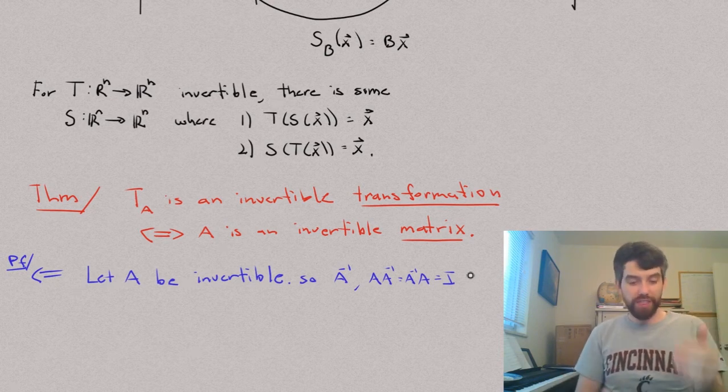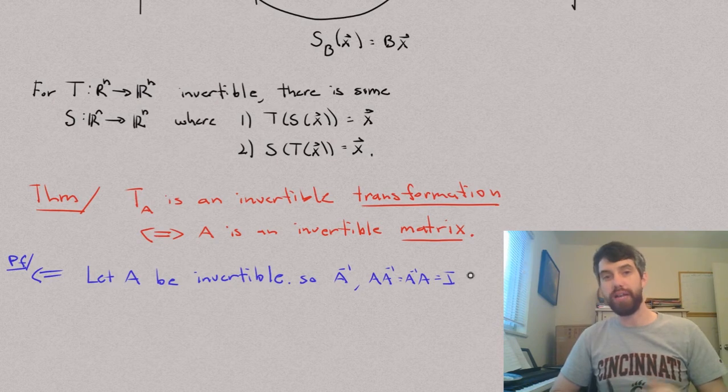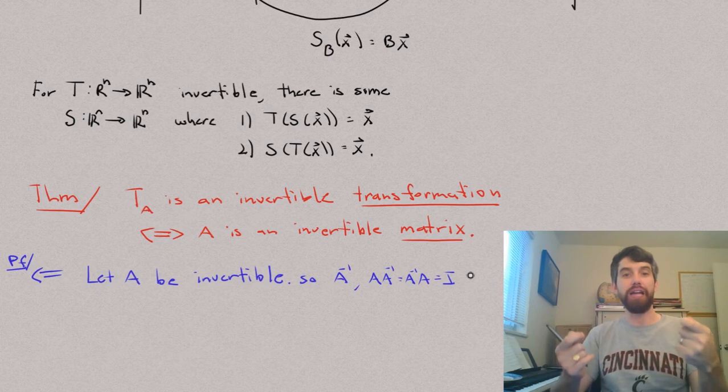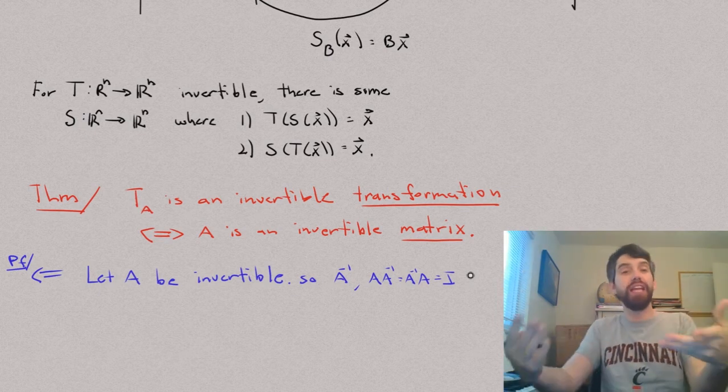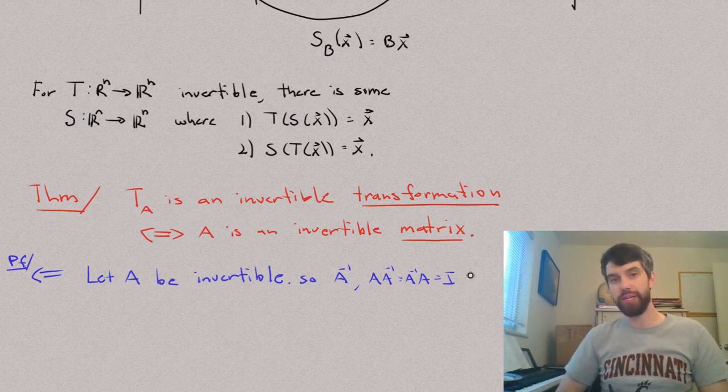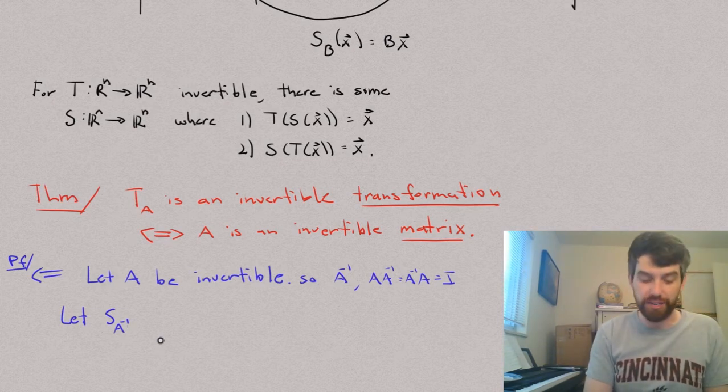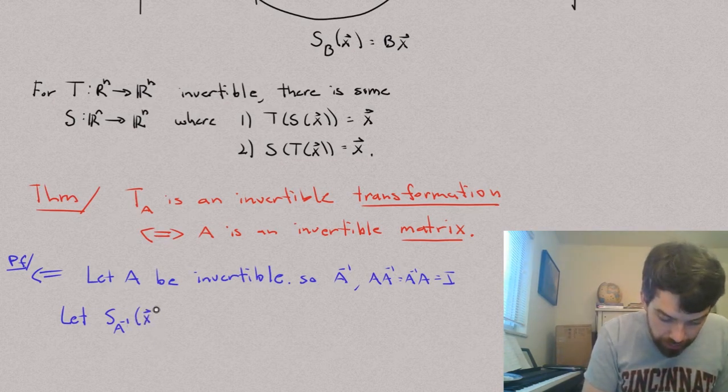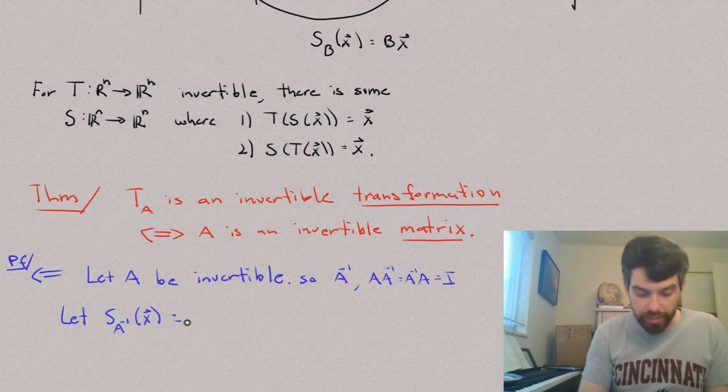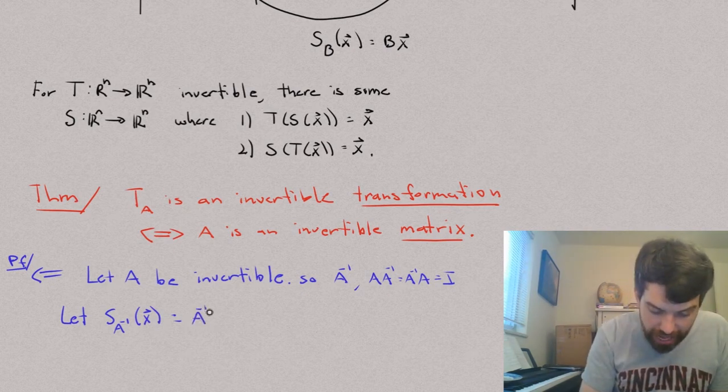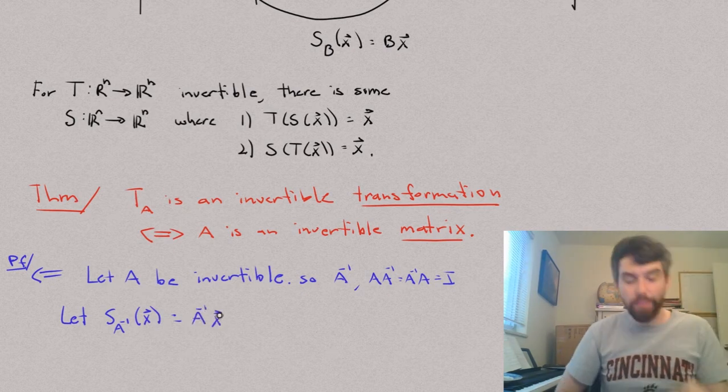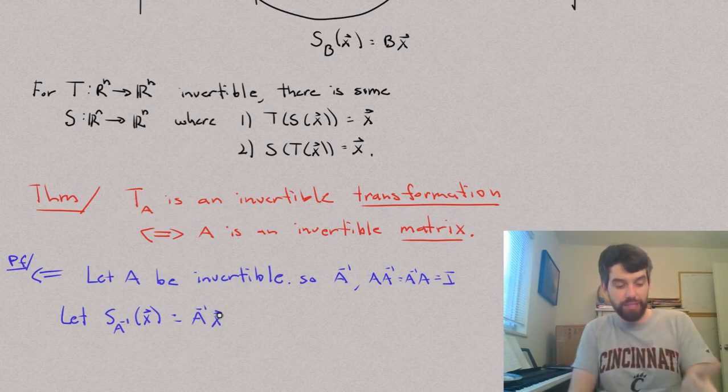So, if I think about what I'm trying to prove that I've got that TA is an invertible transformation, what my definition says is I have to find an S. I have to find an inverse to that particular transformation. So, what I'm going to do is let S be the transformation that is defined by A inverse. In other words, the way S works is it takes the matrix A inverse and multiplies that to the vector X. This is my definition.